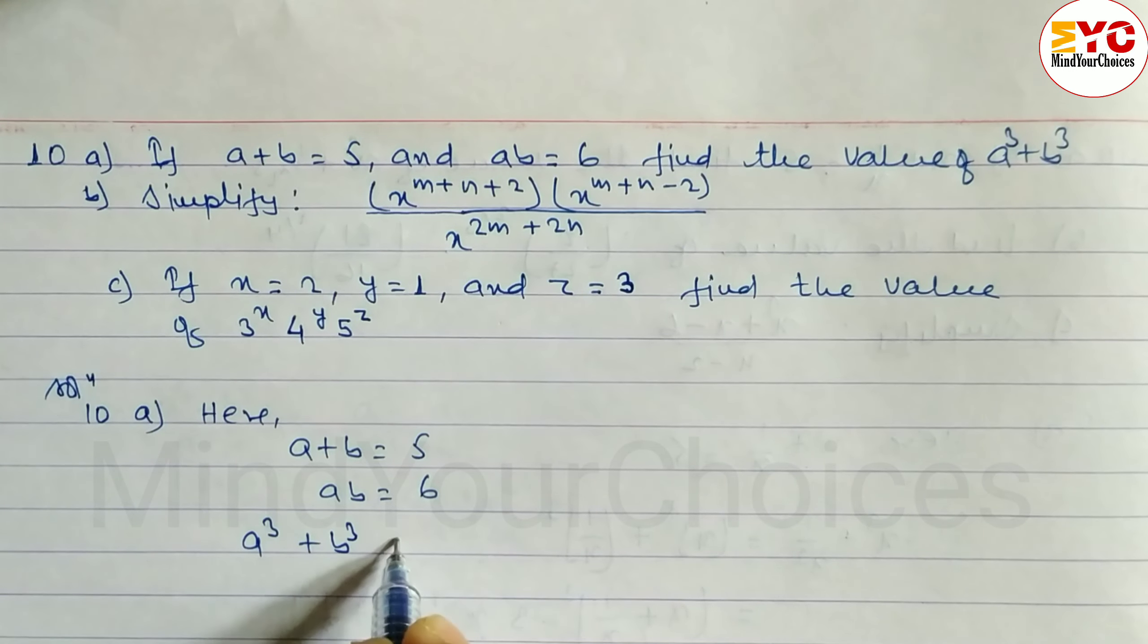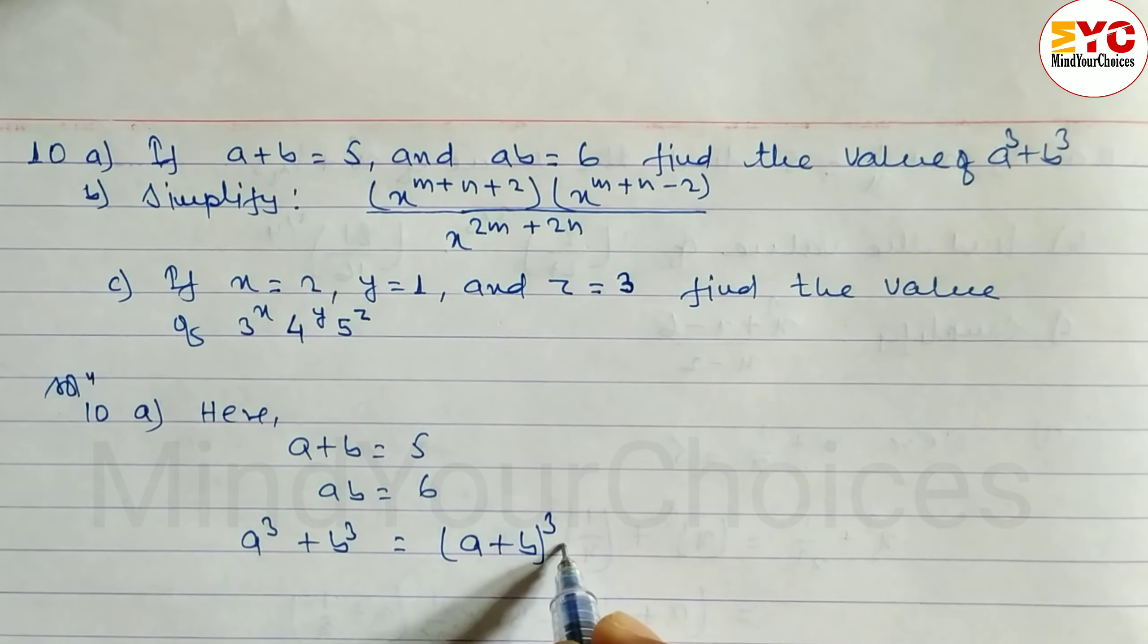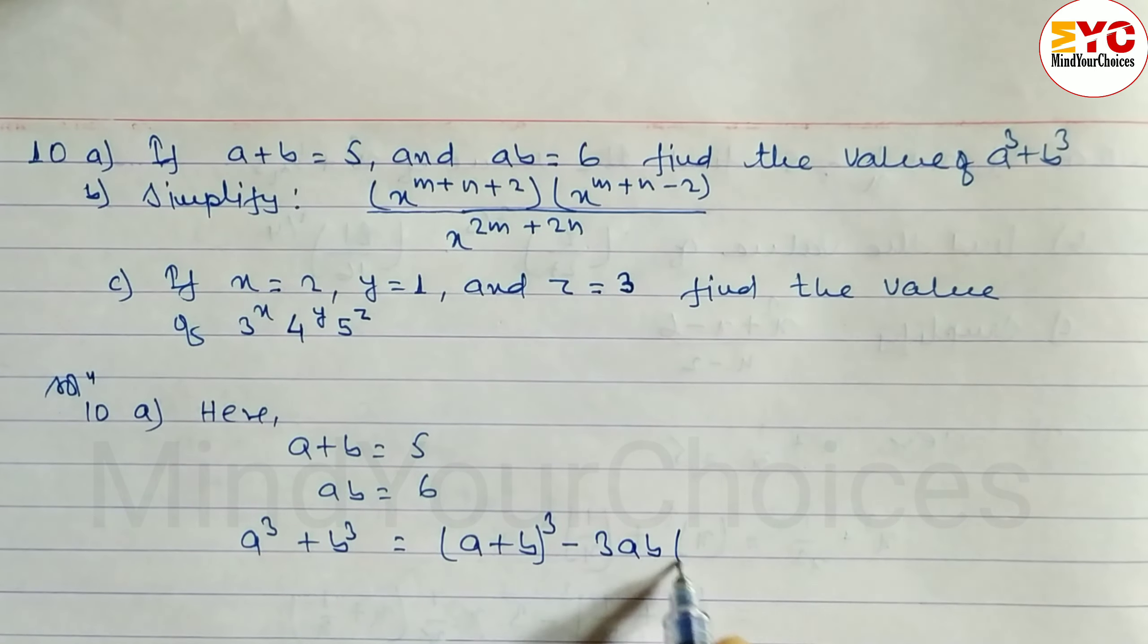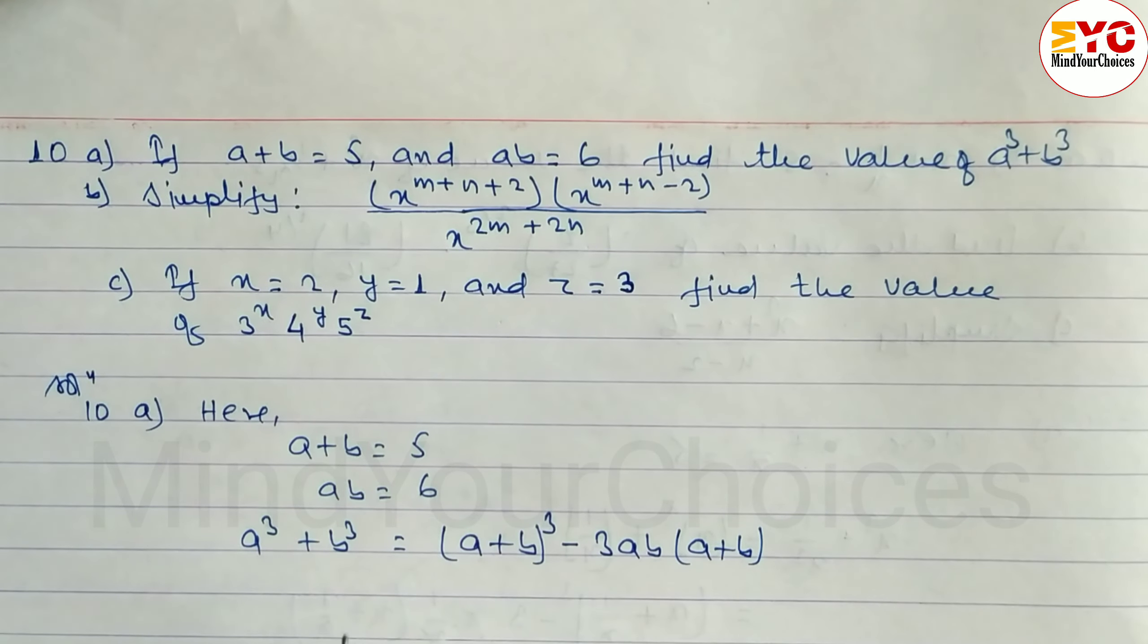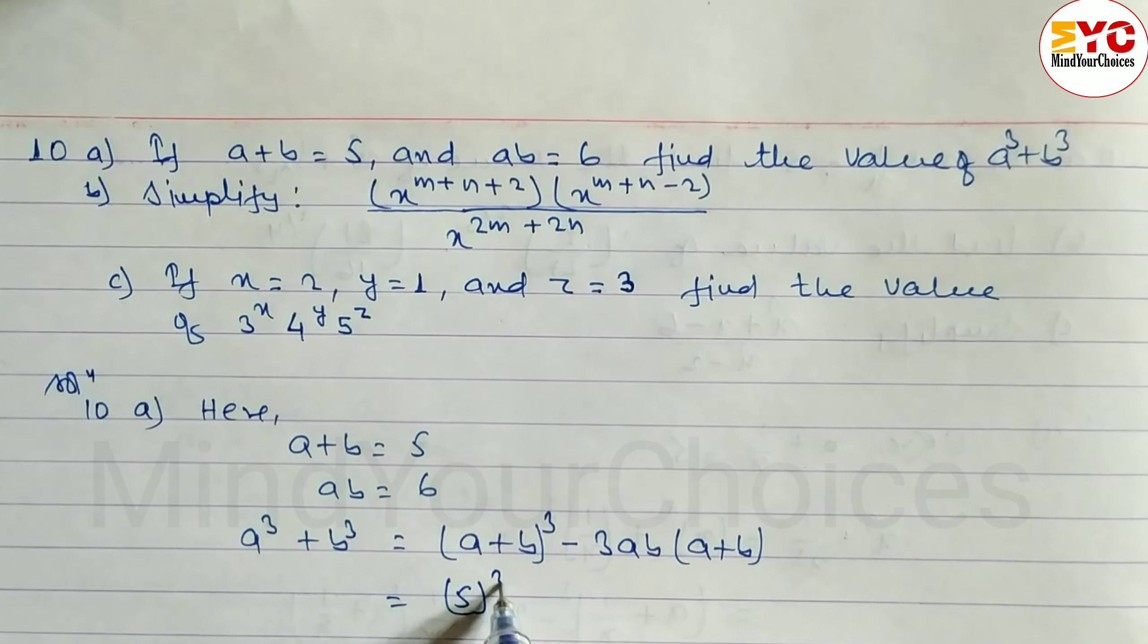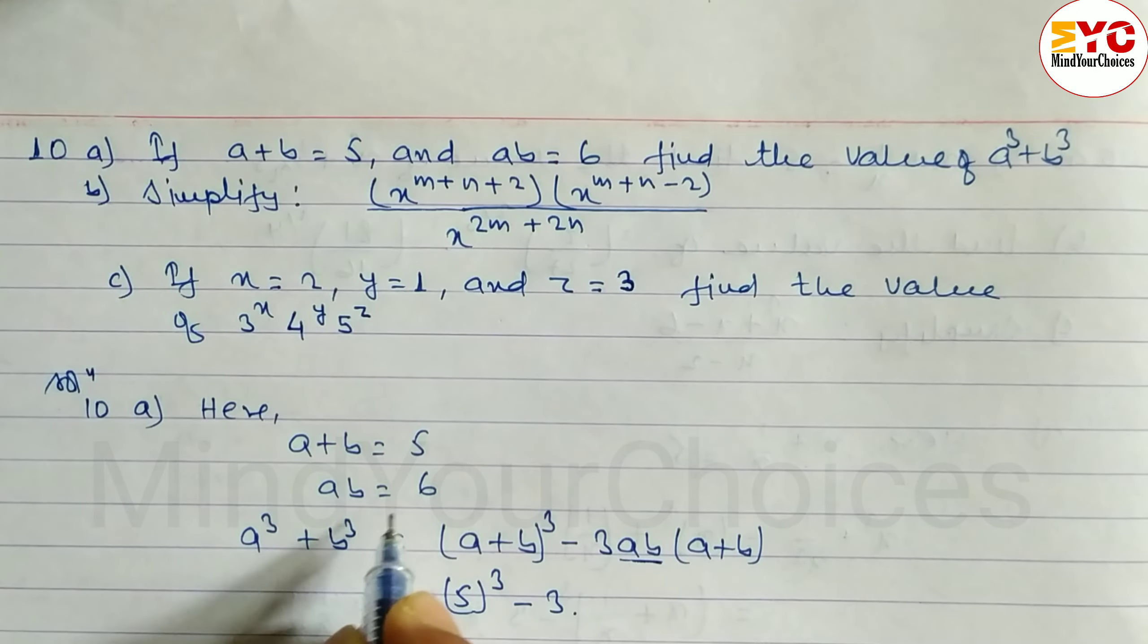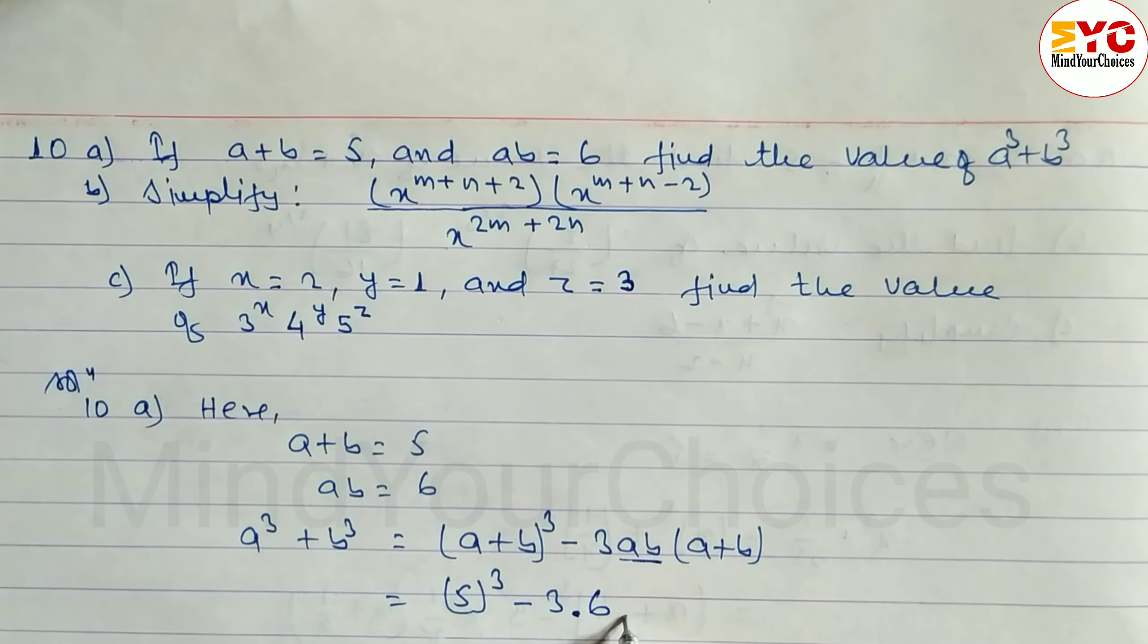We have to use the formula of A cube plus B cube: A plus B whole cube minus 3AB times A plus B. After this, in place of A plus B we put 5, so 5 power 3 minus 3 times AB. AB's value is 6.